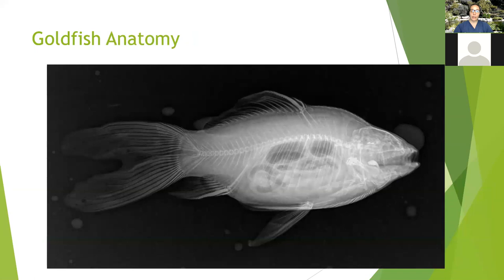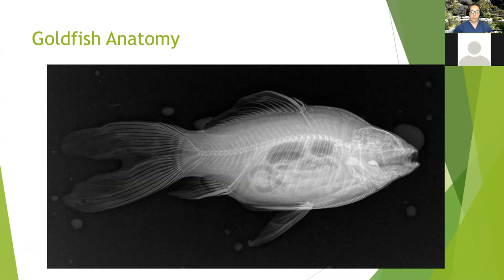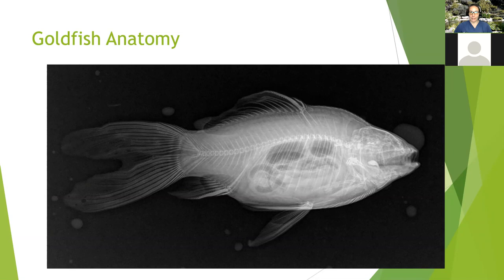Looking at goldfish anatomy: they usually have at least a two-chambered swim bladder — you can see the cranial and the larger caudal chambers. This is a long-bodied goldfish that has neutral buoyancy. Most pet fish, and goldfish in particular, should be neutrally buoyant, meaning they can maintain their body position in the middle of the water column. Some species are positively buoyant and roam at the top, while others like loaches and plecos are negatively buoyant.